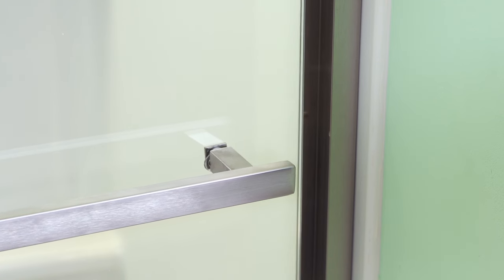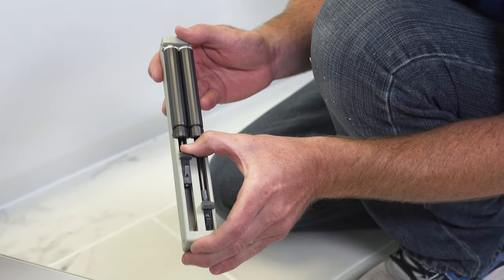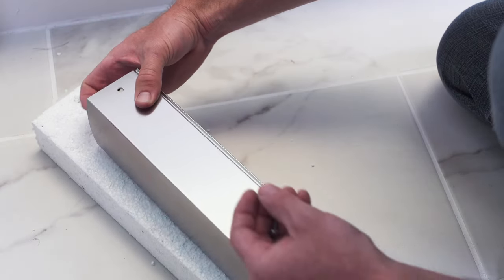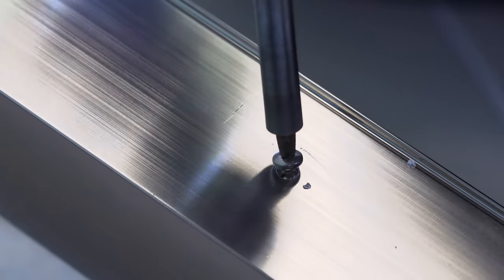For doors with the soft close damping system, arm the soft close system before the panels are installed. Place the soft close system into position and attach it to the header with the provided screws. Repeat this for both sides of the header.